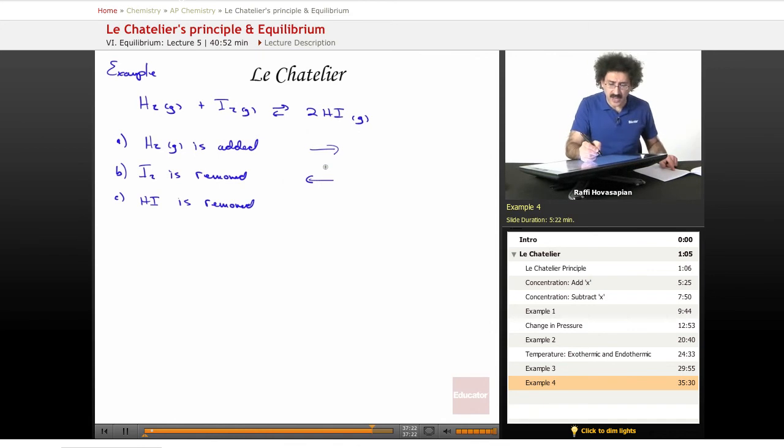If I remove hydrogen iodide, the system is going to want to offset by creating more hydrogen iodide. How do you create more iodide? You shift the reaction to the right.